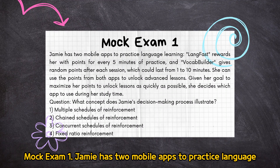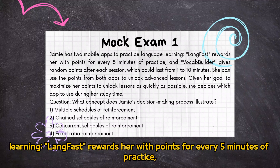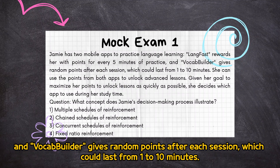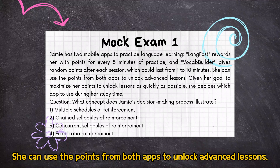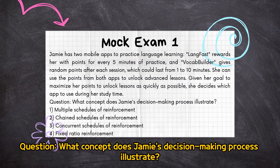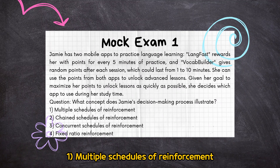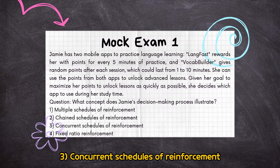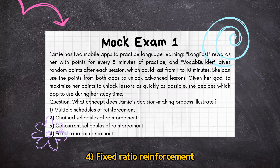Mock Exam 1: Jamie has two mobile apps to practice language learning. LangFest rewards her with points for every five minutes of practice, and VocabBuilder gives random points after each session, which could last from one to ten minutes. She can use the points from both apps to unlock advanced lessons. Given her goal to maximize her points to unlock lessons as quickly as possible, she decides which app to use during her study time. Question: what concept does Jamie's decision-making process illustrate? (1) Multiple schedules of reinforcement, (2) Chain schedules of reinforcement, (3) Concurrent schedules of reinforcement, (4) Fixed ratio reinforcement.